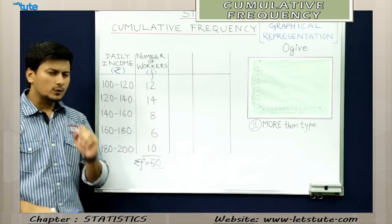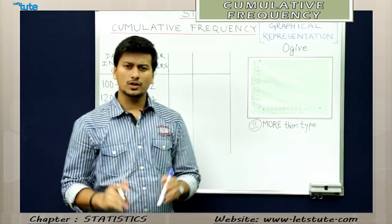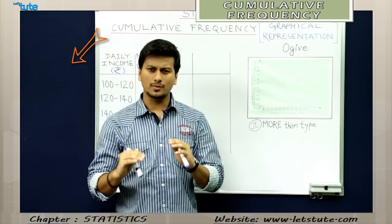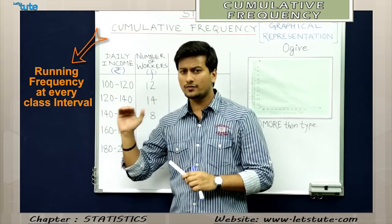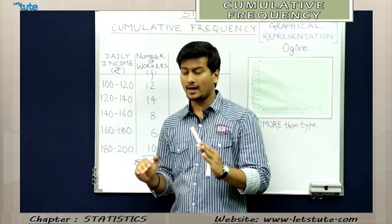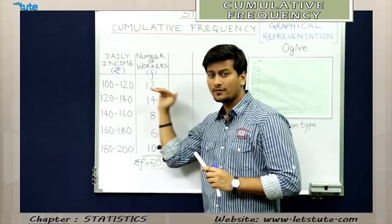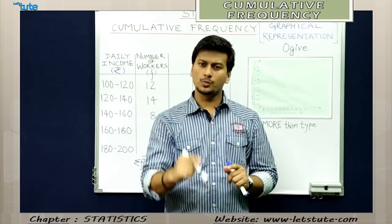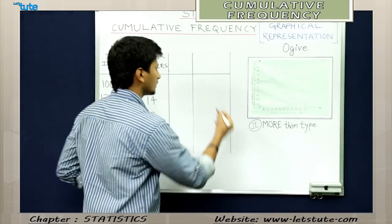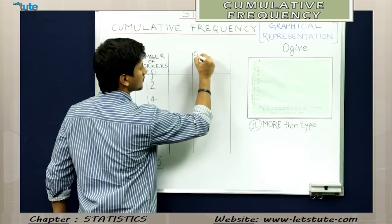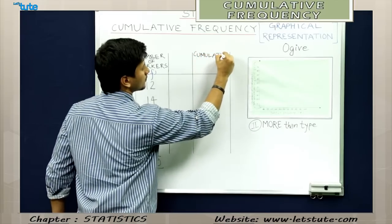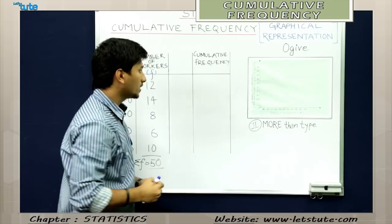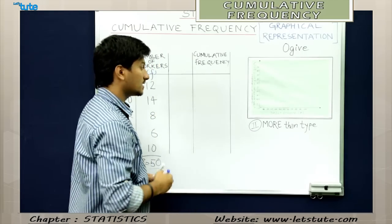This is a frequency distribution among various groups of daily income. A frequency distribution can be easily converted into a cumulative frequency distribution. Cumulative frequency is the running frequency of every group, so we add frequencies at every single group. Let us make a column for cumulative frequency.